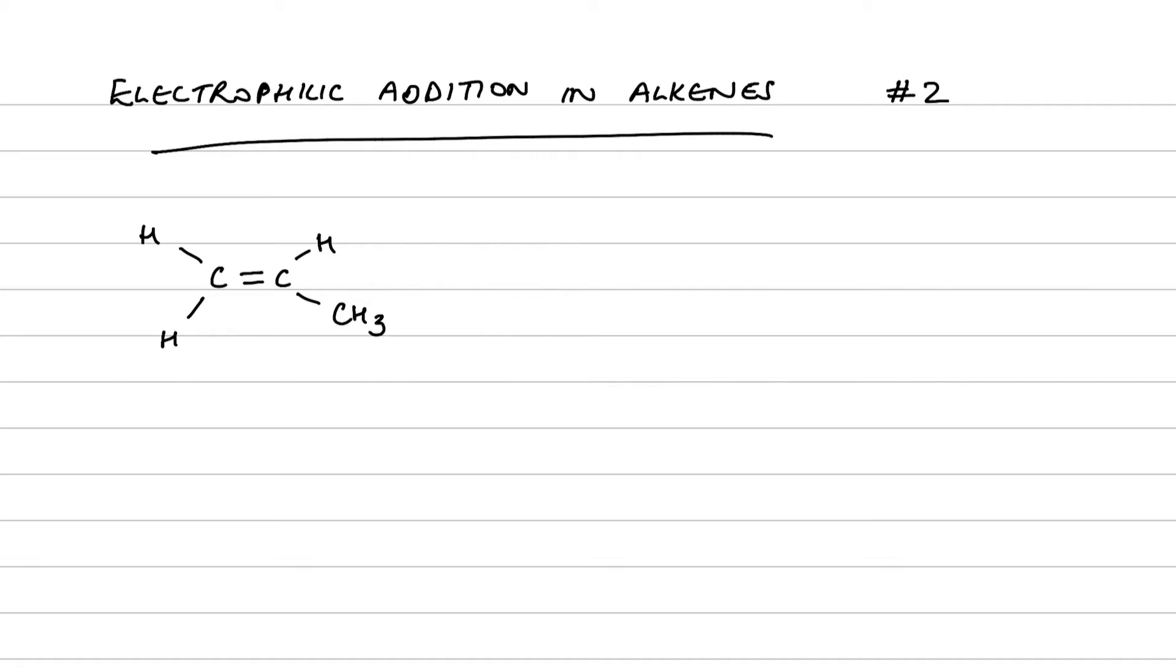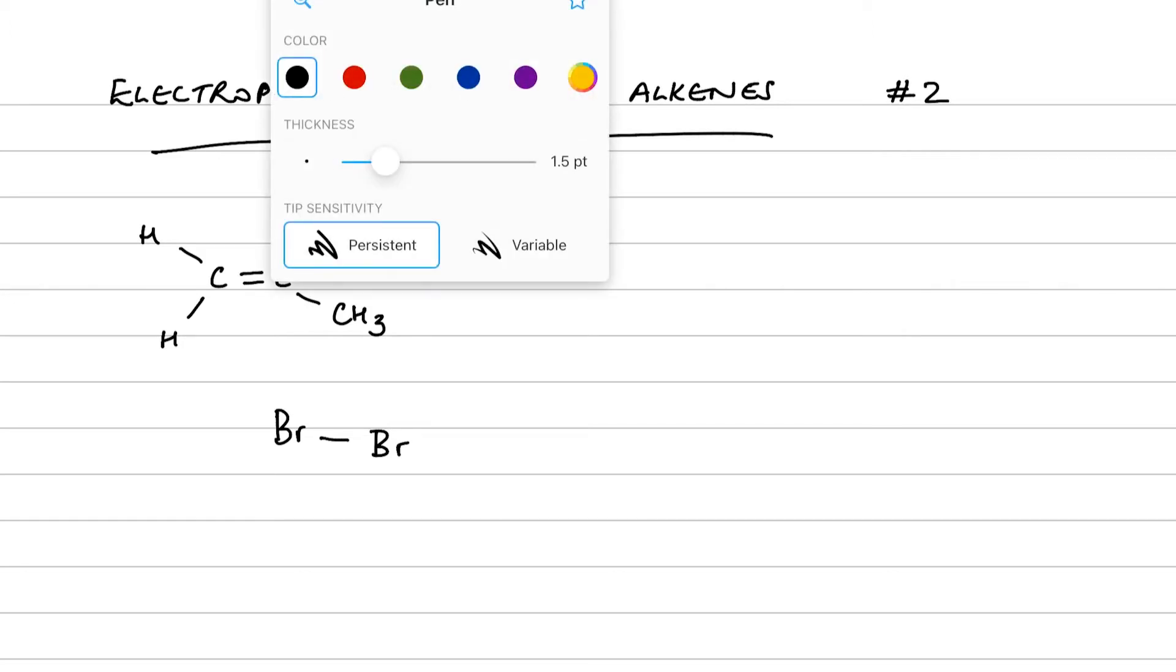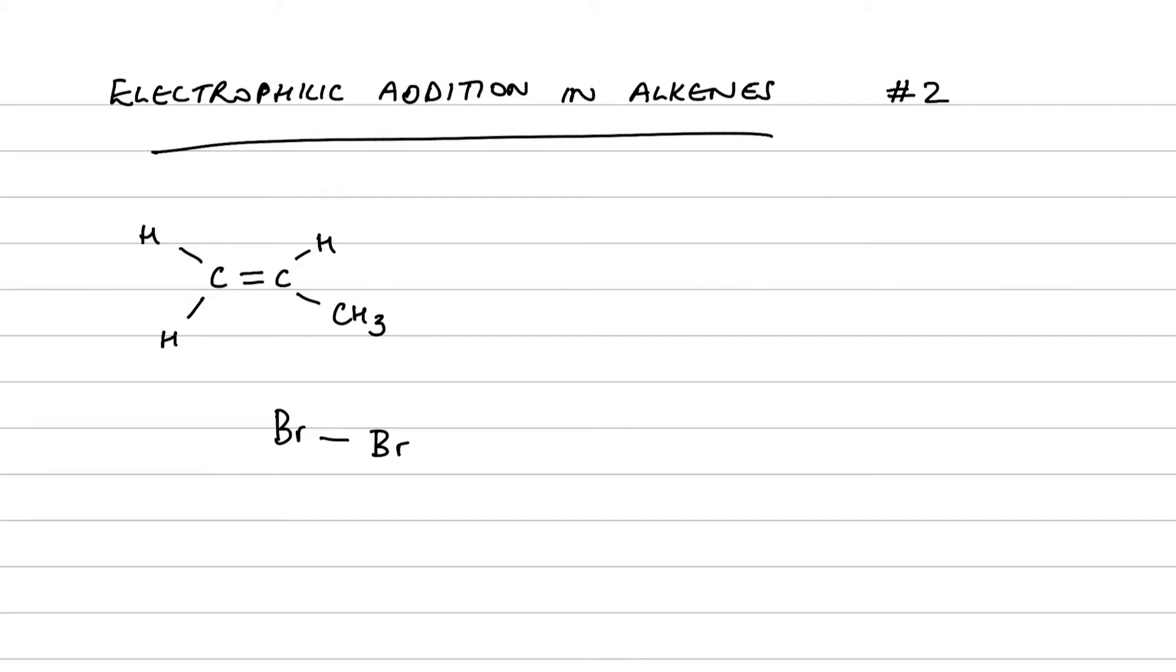So what would the reaction mechanism for this look like? Well, let's start with propene and we've got Br2, our bromine molecule. Now when we look at bromine as a molecule, it's not positively charged and it doesn't have a delta positive atom in it. It doesn't seem straight off that this is going to be a regular type of electrophile.